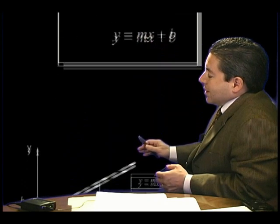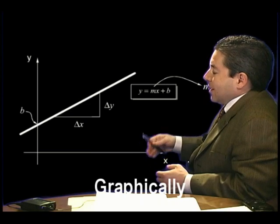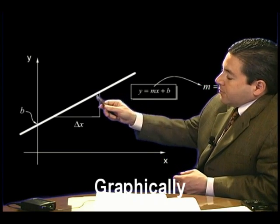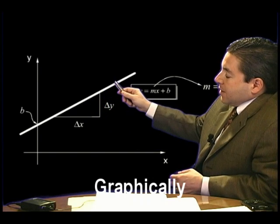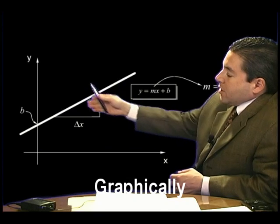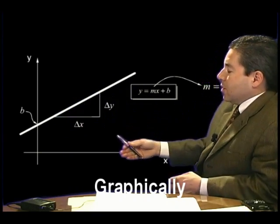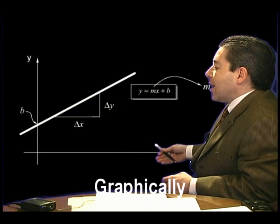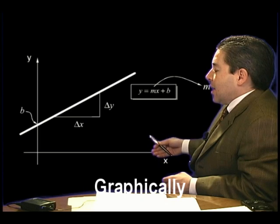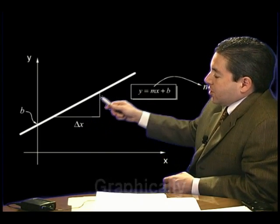Let's look at what this linear equation means, both graphically and algebraically. Graphically, a linear equation is a straight line on a Cartesian coordinate system — with a Y axis, a vertical axis representing the output variable, and a horizontal axis, X, the input variable. A proportional or linear relationship will result in a straight line.